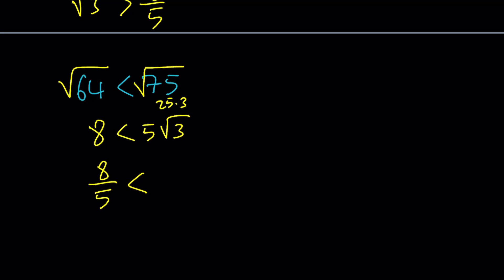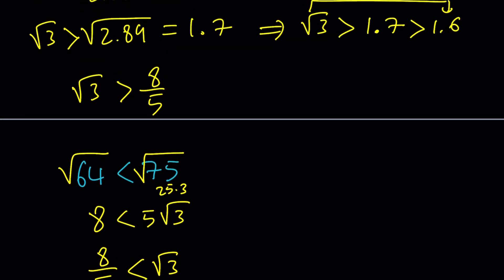You're going to get 8 over 5 is less than root 3, which means square root of 3 is greater than 8 over 5. So, that's just another way to look at this inequality, which is what we're going to use for our problem. Now, the question is, though, how does this connect to 2 to the power root 3 and 3?